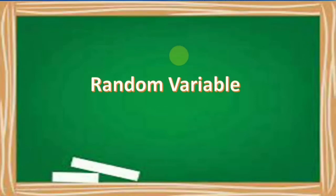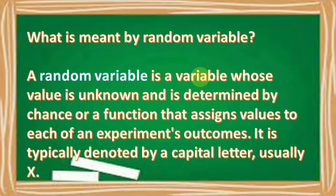Okay, so for today, we're going to discuss random variable. So what is meant by random variable? A random variable is a variable whose value is unknown and is determined by chance, or a function that assigns values to each of an experiment's outcomes. It is typically denoted by a capital letter, usually X.